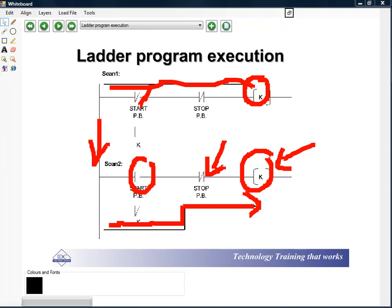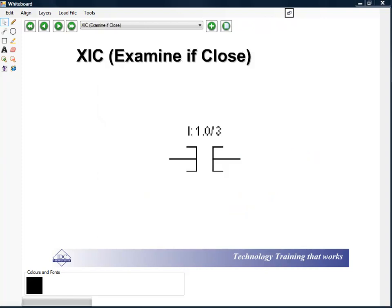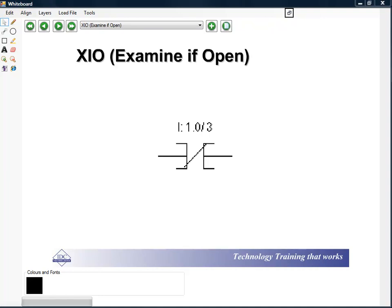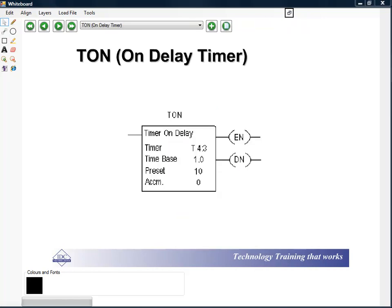Here's a few examples of a few instructions. This is called a normally open contact, examine if closed. Another one is examine if open, referred to as normally closed contact. These are all instructions used.